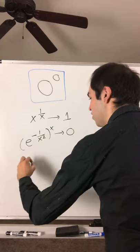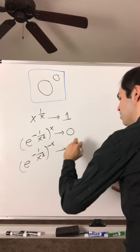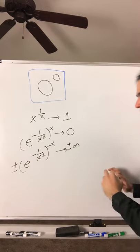Taking the reciprocal, e to the minus 1 over x squared to the minus x, that goes to infinity. So in the end, plus minus infinity.